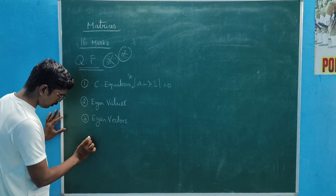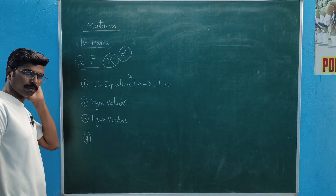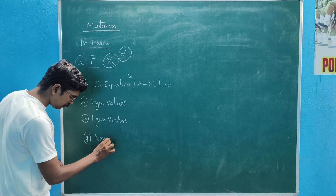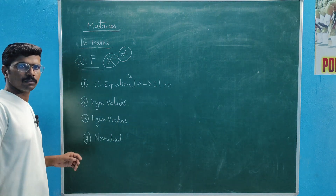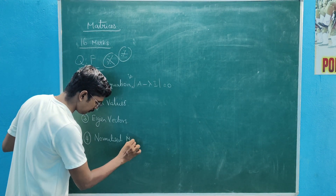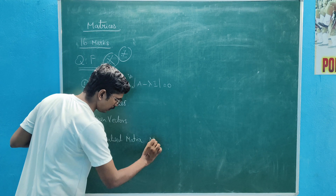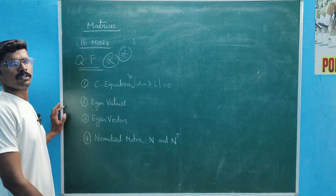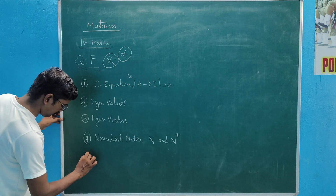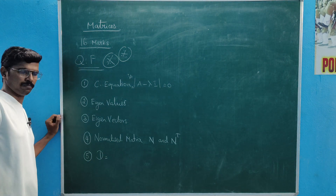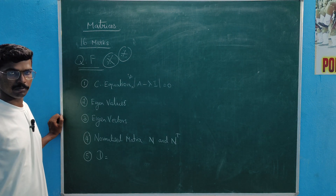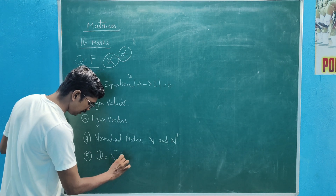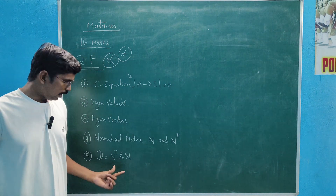Steps: number one — third step going on, the step is a very important course. The third step and fourth step — normalize it, normalize the eigenvectors into a matrix N. N transpose, and D equal to N transpose A N.